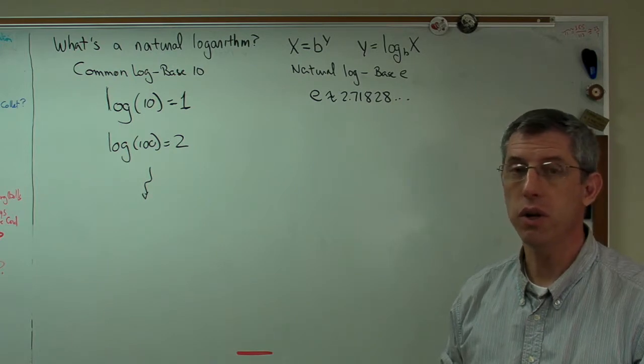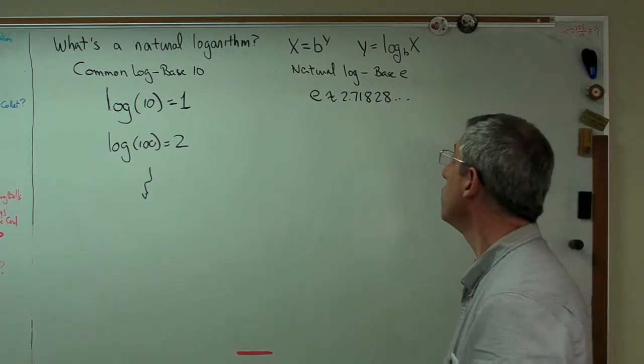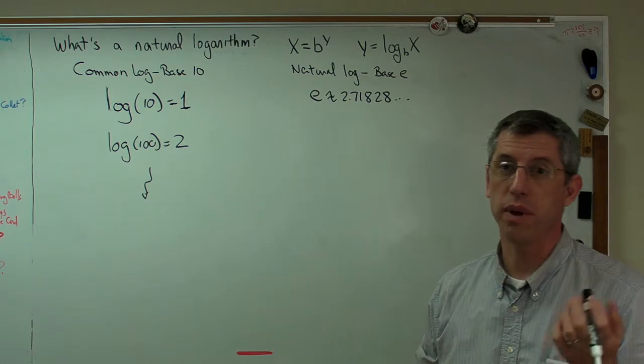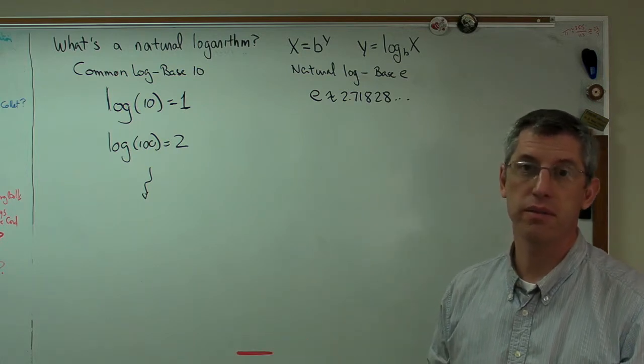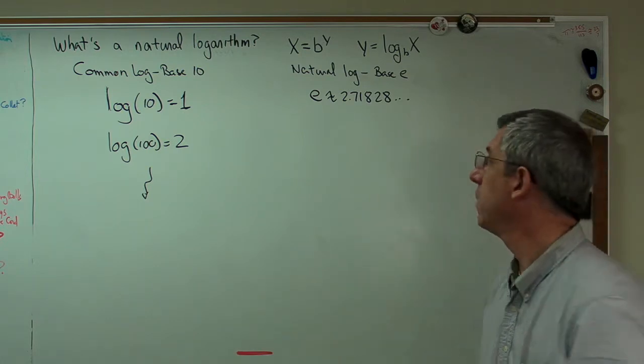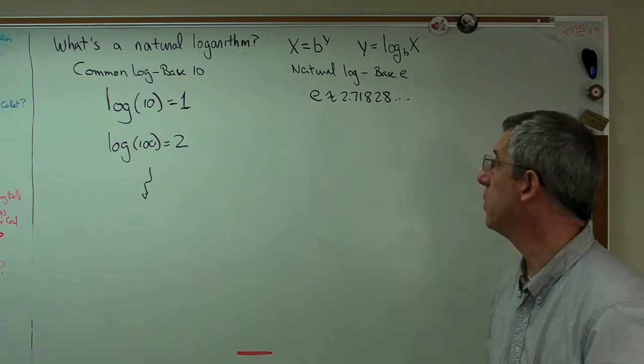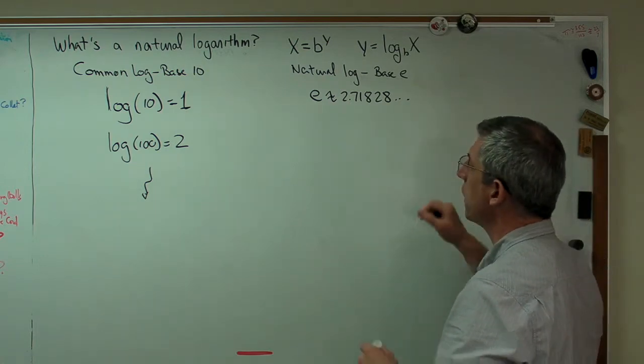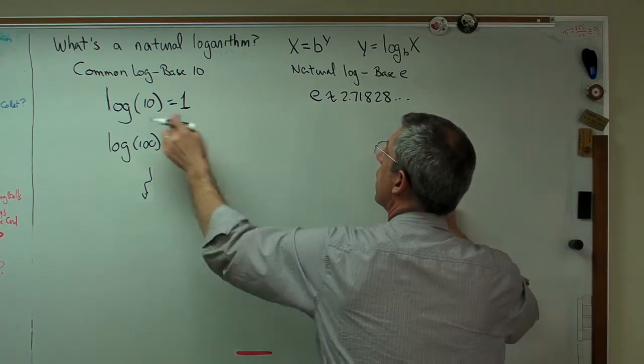You see base 2 logarithms occasionally. There's no mathematical reason why you couldn't make logs to the base 31 if you wanted to. It might not be convenient, but you could certainly do it. Now, just to show you here, log, natural log...